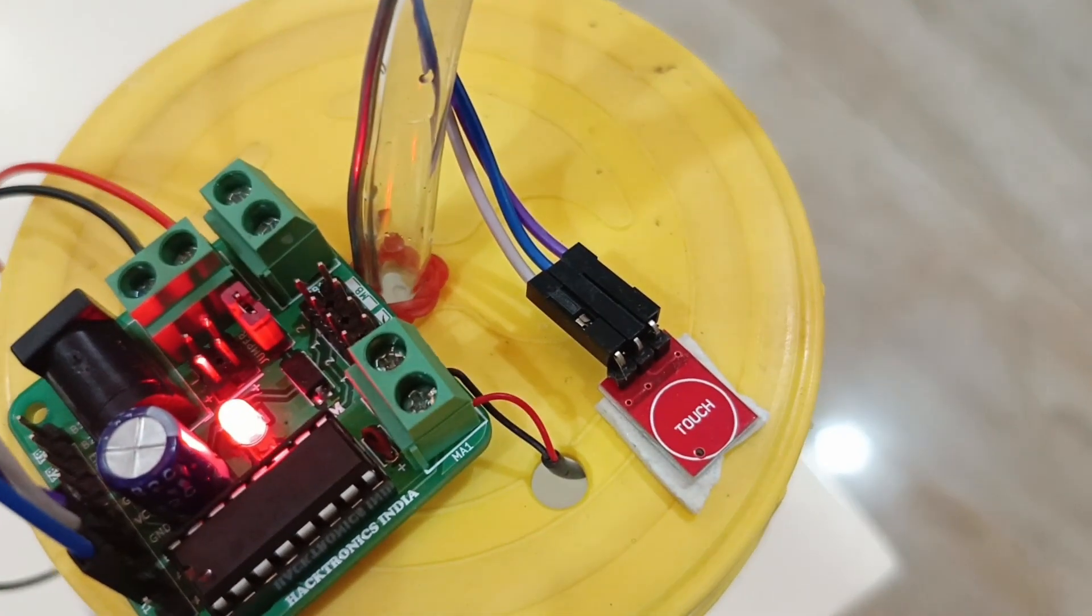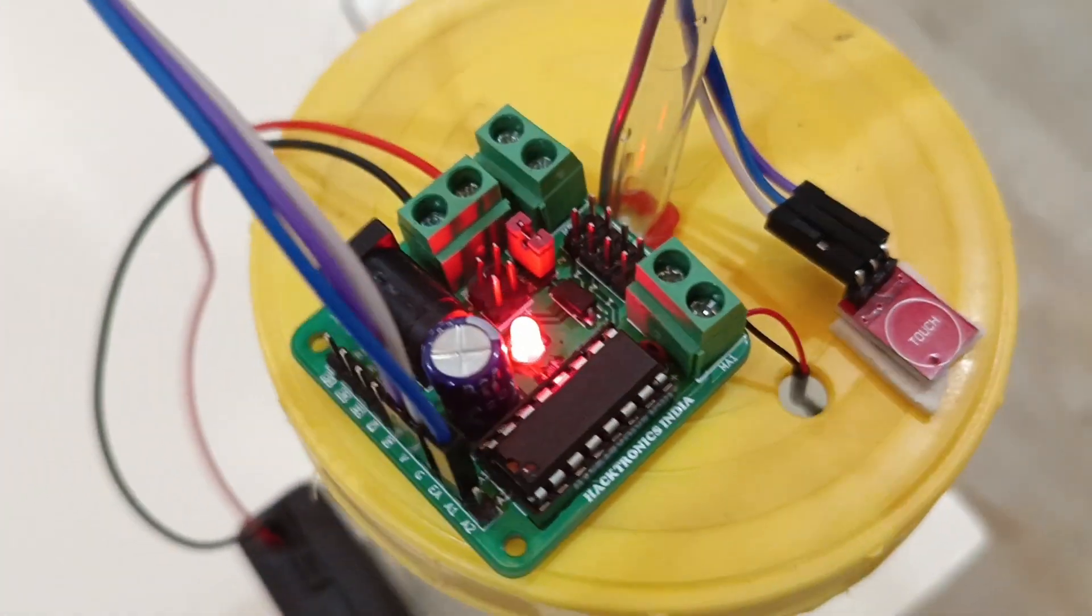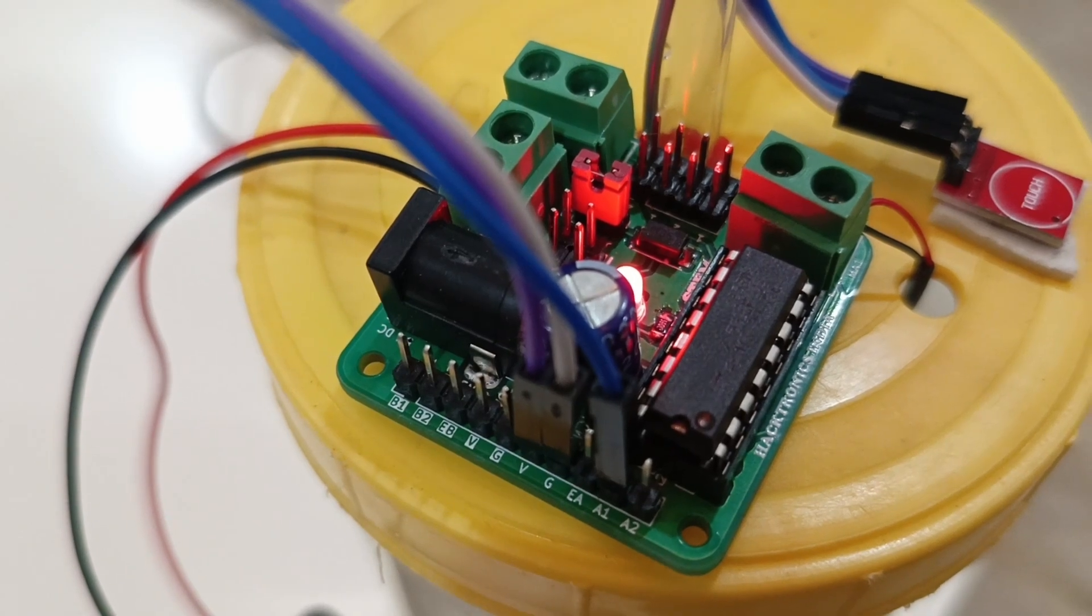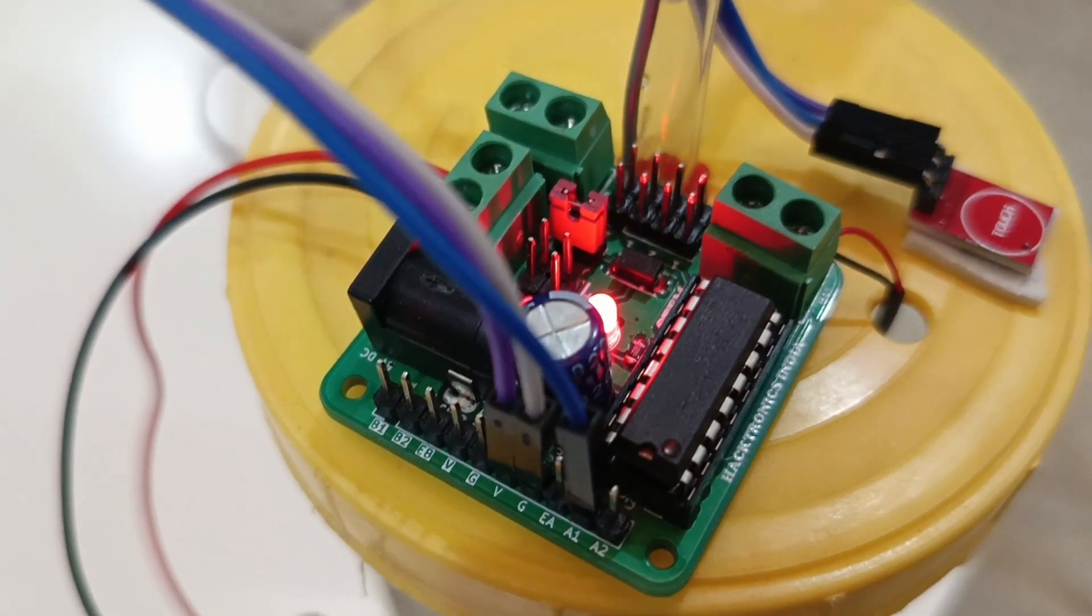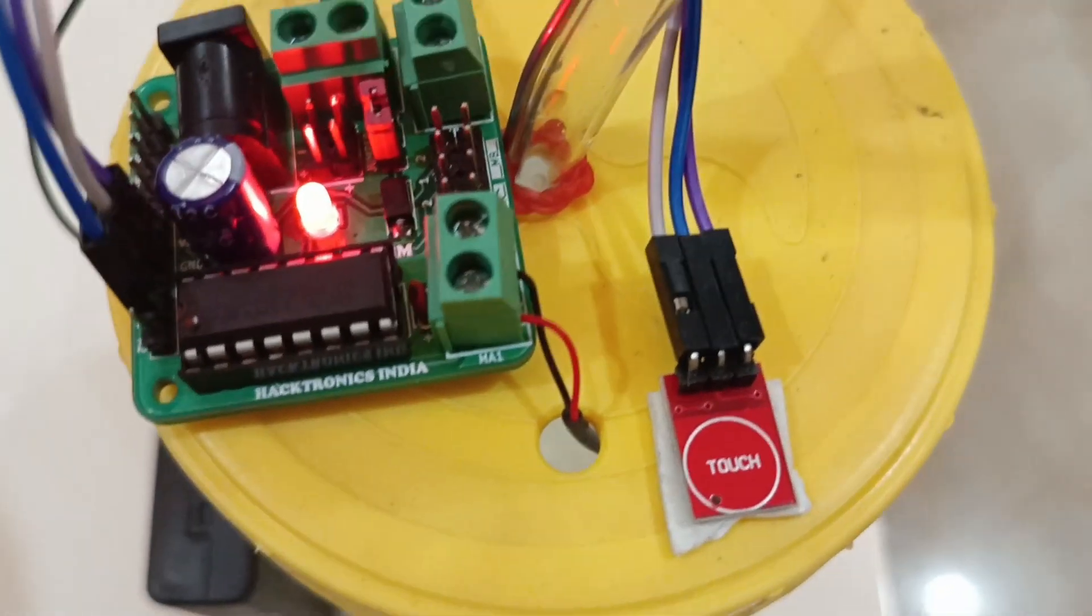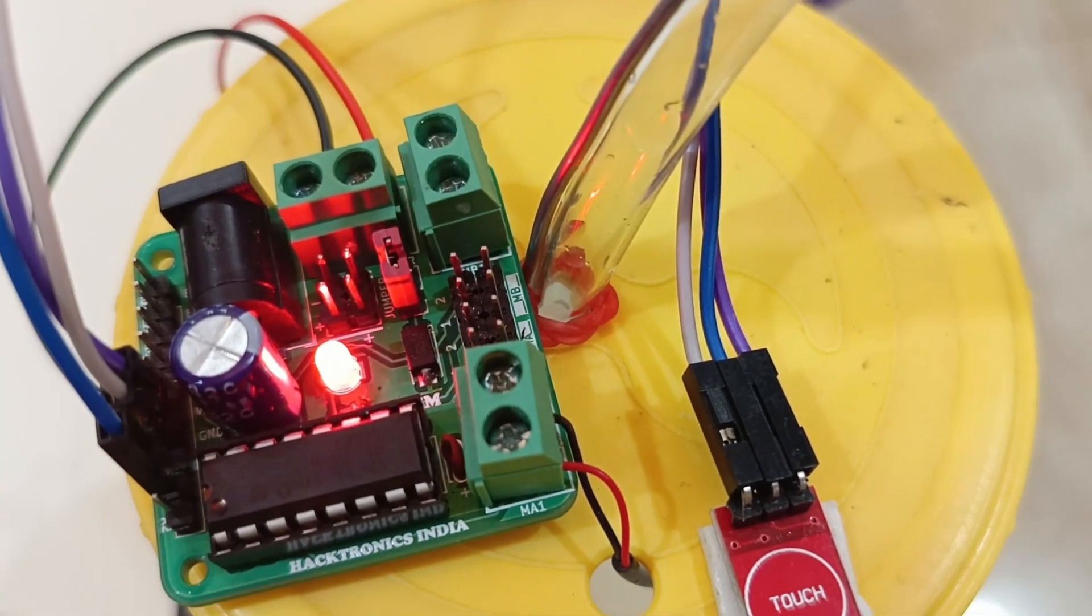This is our touch sensor. The ground is connected to ground, the voltage VCC is connected to V, and the signal out is connected to A1. The motor is connected into MA1 and MA2.